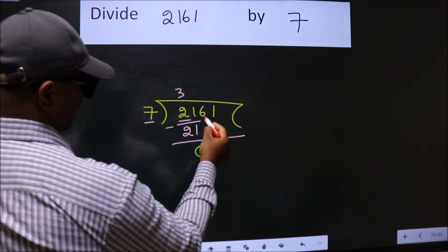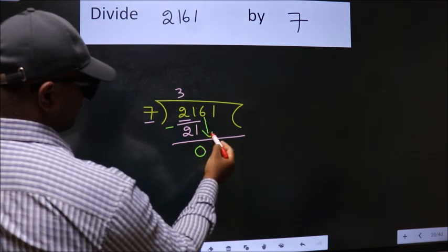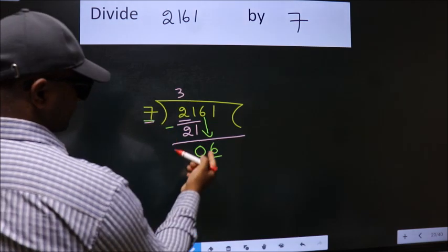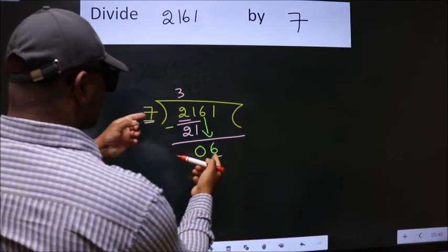After this, bring down the beside number. So 6 down. Here we have 6, here 7. 6 is smaller than 7.